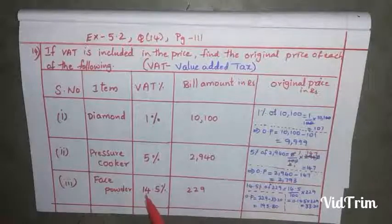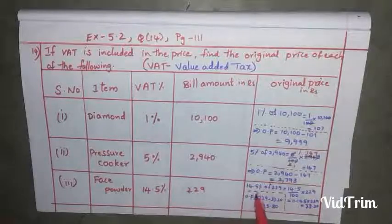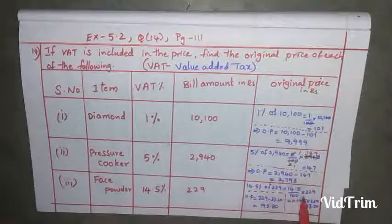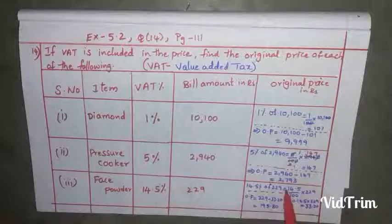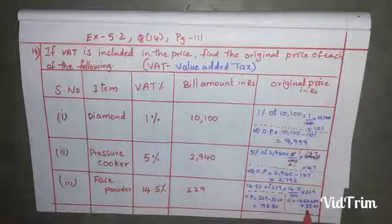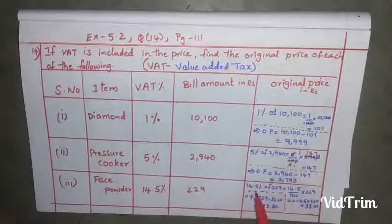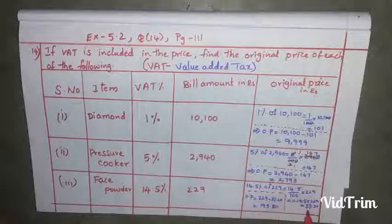For face powder, the value added tax is 14.5% and the bill amount is 229 rupees. So 14.5% of 229 equals 14.5 by 100 into 229. Converting 14.5 to decimal gives 0.145. So 0.145 into 229 equals 33.20. Therefore 14.5% of 229 is 33.20.